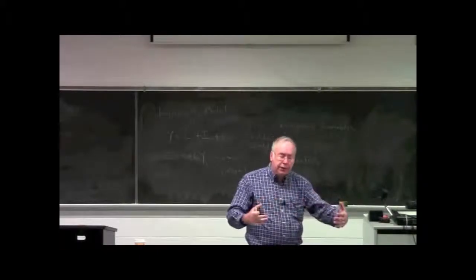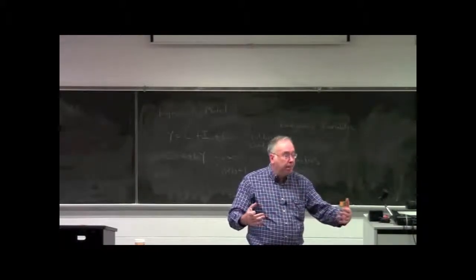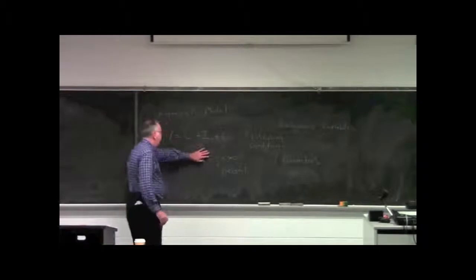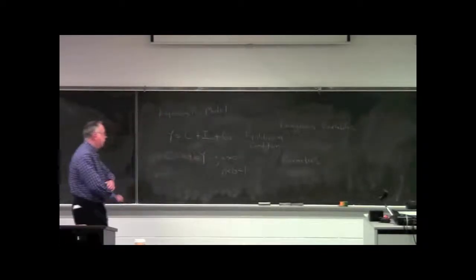It would be the level of consumption that occurs when income is 0. If you just plug in a 0 for Y, notice this term would drop out and that would give you your consumption level. So A is autonomous consumption.